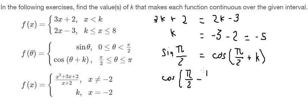Pi over 2 minus pi over 2 equals cosine of pi over 2 plus k. We have pi over 2, pi over 2, which means pi over 2 equals cosine of pi over 2 plus k.